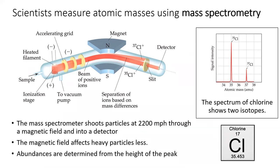Similarly, the abundance of each element is given by the height of the peak on the detector.